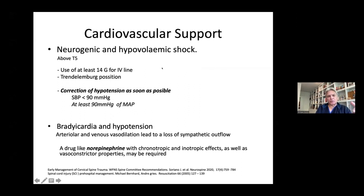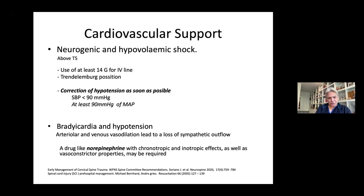Regarding cardiovascular support, for neurogenic and hypovolemic shock above T5, use at least a 14G IV line and Trendelenburg position. Correct hypotension as soon as possible — if systolic blood pressure is less than 90, correct immediately — and maintain at least 90 mmHg mean arterial pressure. If bradycardia and hypotension occur due to arteriolar and venous vasodilatation and loss of sympathetic outflow, a drug like norepinephrine with chronotropic, inotropic, and vasoconstrictor properties may be required.